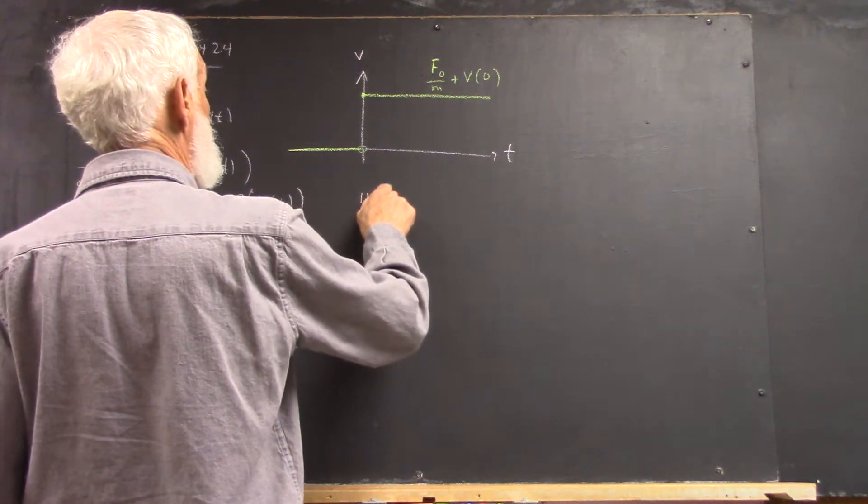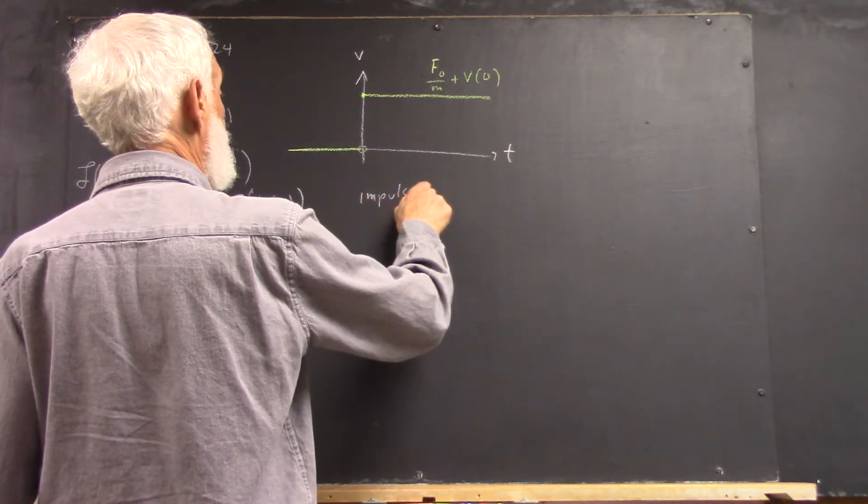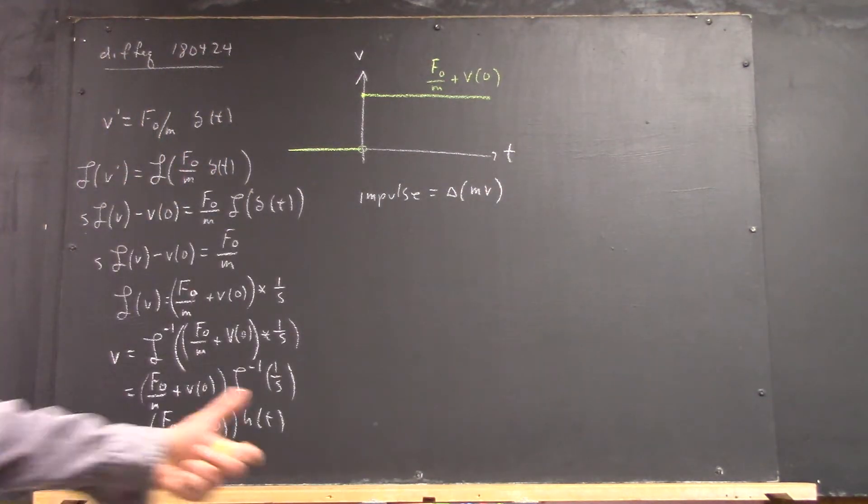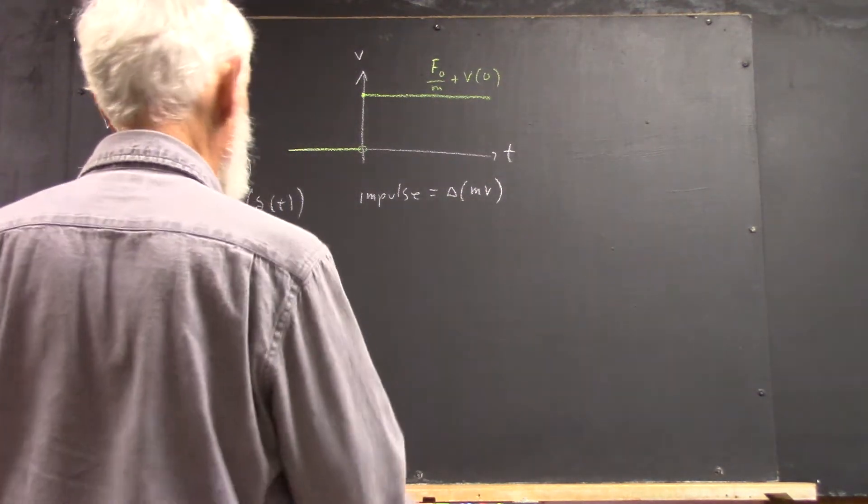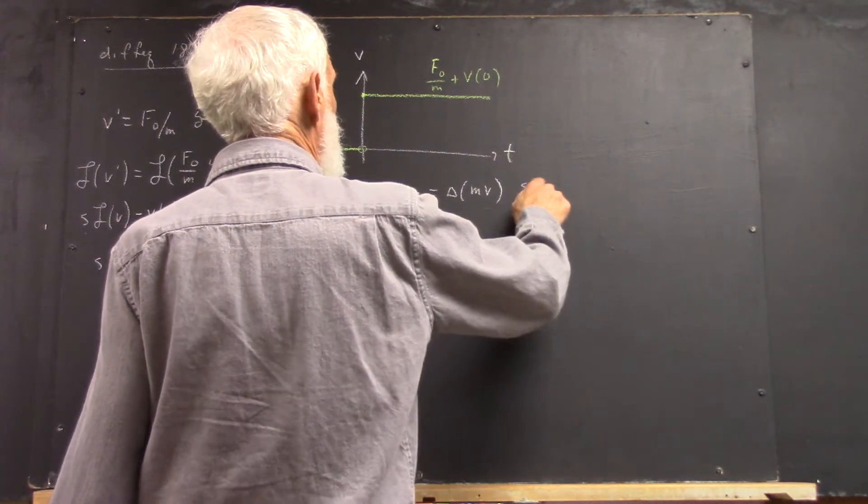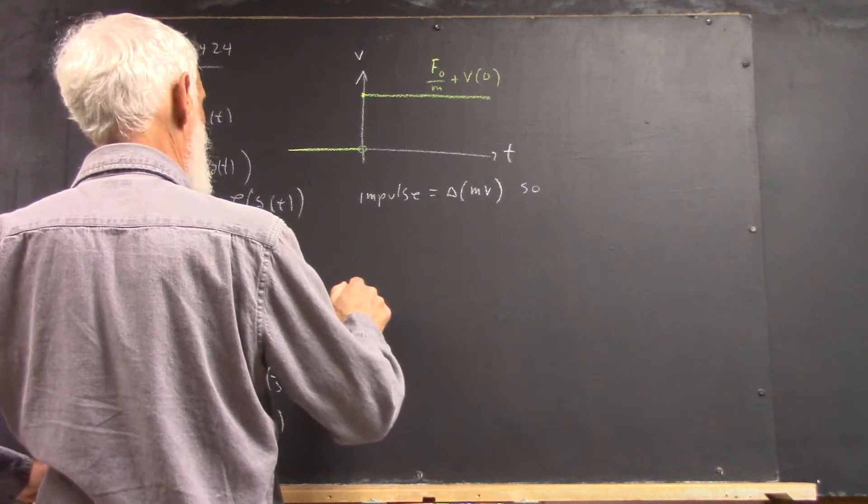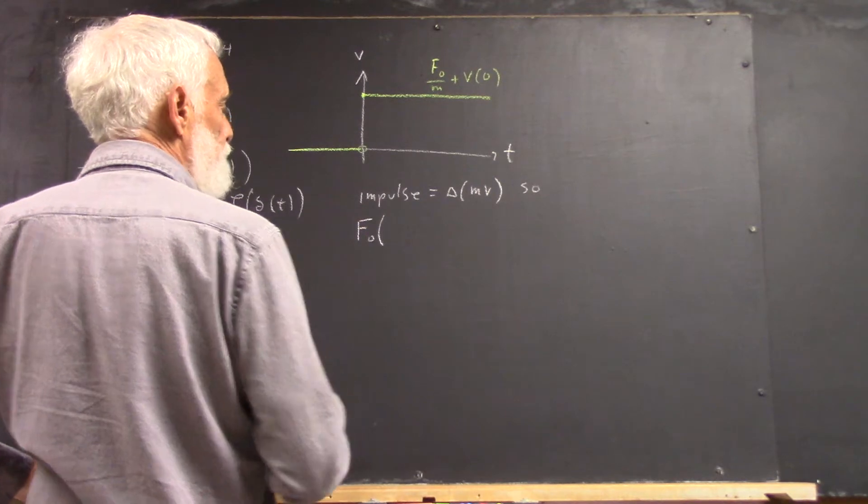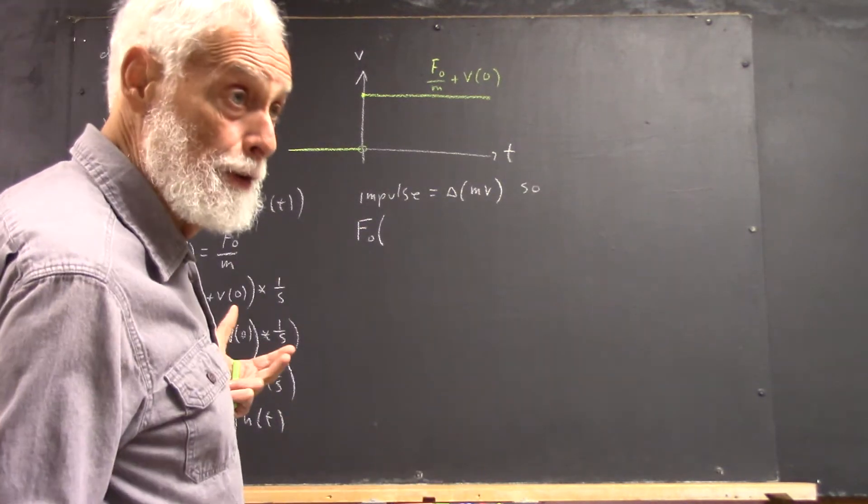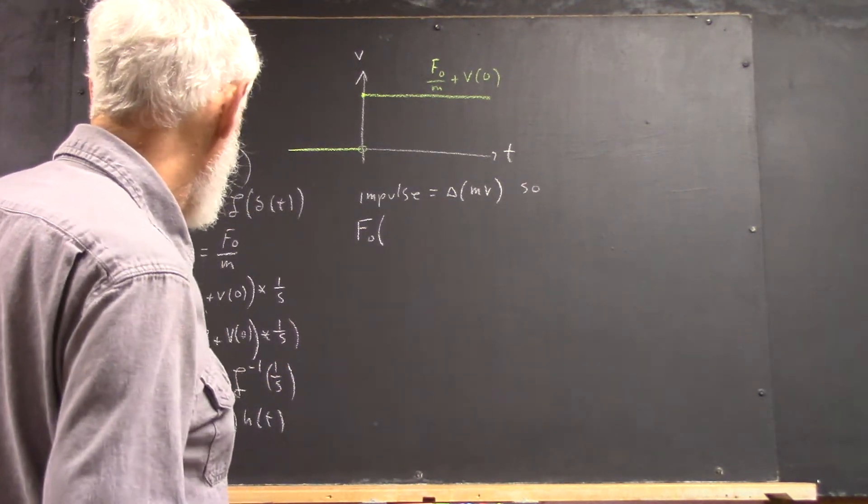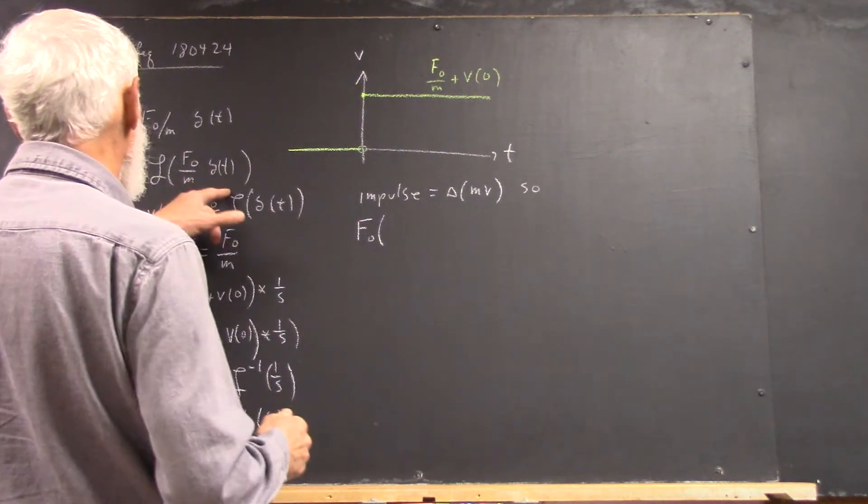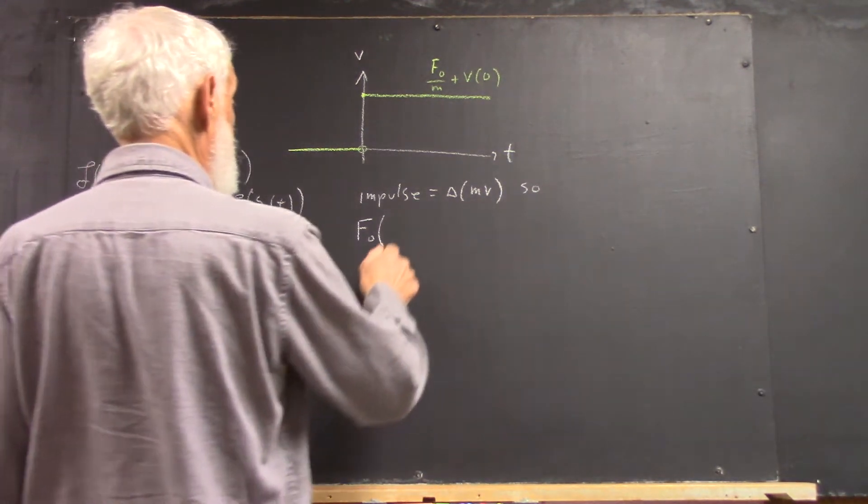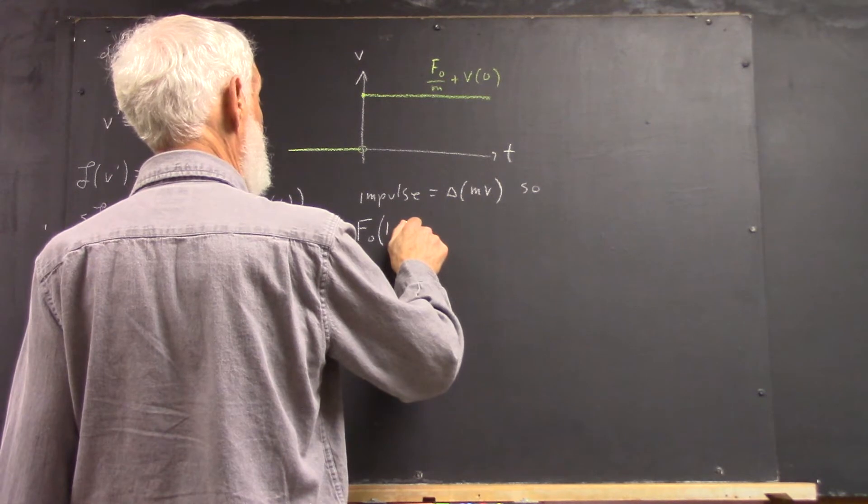Well, we know impulse is change in momentum, right? So I'm just going to go over to SI units. Remember, the units of this integral of the impulse and so forth is just f naught times 1 time unit.